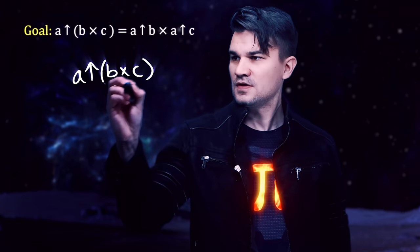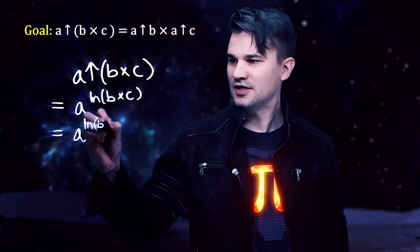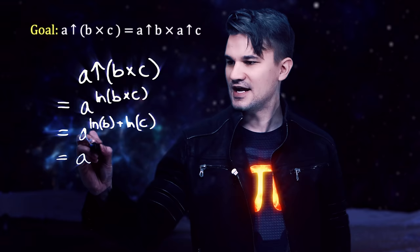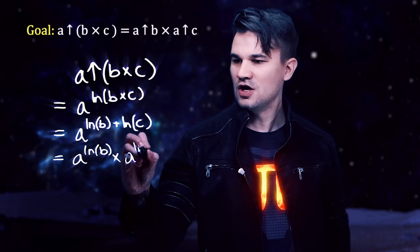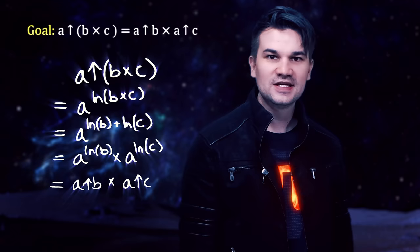A power log B times C is A to the natural log of B times C, and applying a property of logarithms gives us A to the natural log of B plus the natural log of C. And that is, of course, A to the natural log of B times A to the natural log of C, which is A power log B times A power log C. So indeed, power log does distribute over multiplication, and that is just fantastic.